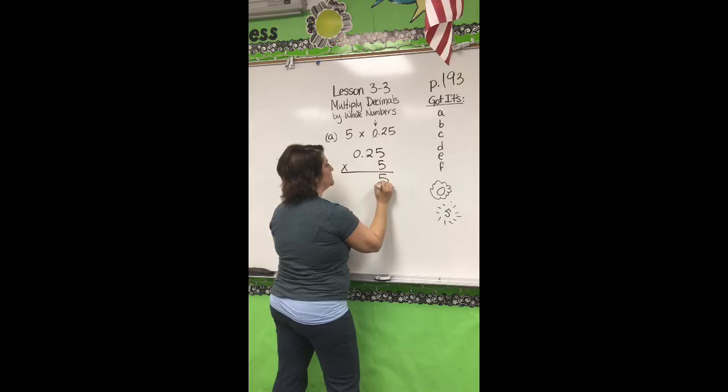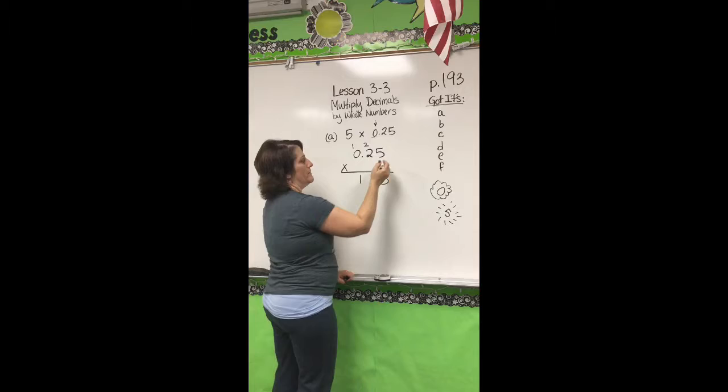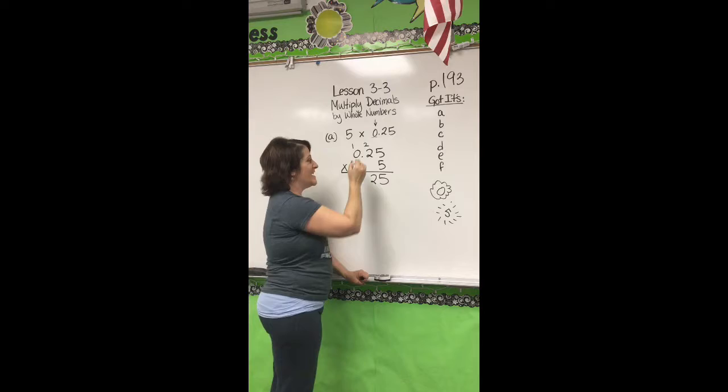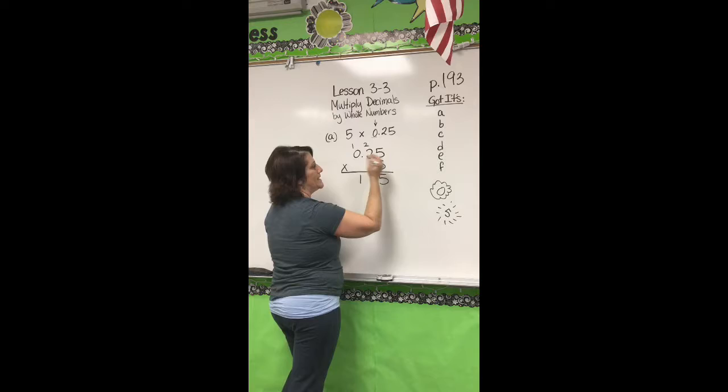5 times 5 is 25; put that 2 up there. 2 times 5 is 10, and the 2 gives me a 12. 0 times 5 is 0, and the 1 there. The one thing I have to always remember when you're multiplying — you still have to consider that decimal. Because we are not adding and subtracting, it's not a matter of just pulling it straight down. Look at the number with the decimal, go all the way to the right, and start counting how many spaces it goes: 1, 2.